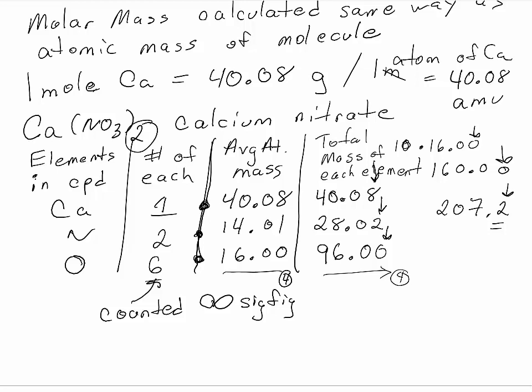So when we add these up, we get 40, 10, 14, 164.10 grams per mole is the molar mass of calcium nitrate.